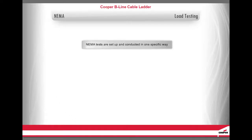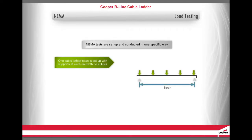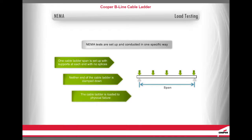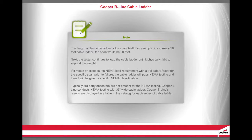The NEMA tests are set up and conducted in one specific way. One cable ladder span is set up with supports at each end with no splices. Neither end of the cable ladder is clamped down. The cable ladder is loaded to physical failure. The length of the cable ladder is the span itself. For example, if you use a 20-foot cable ladder, the span would be 20 feet. The tester continues to load the cable ladder until it physically fails to support the weight. If it meets or exceeds the NEMA load requirement with a 1.5 safety factor for the specific span prior to failure, the cable ladder will pass NEMA testing and be given a specific NEMA classification.